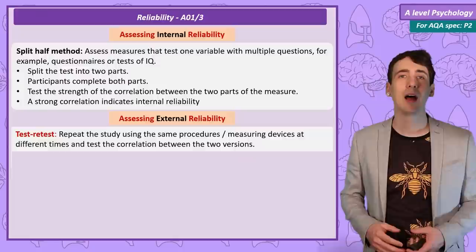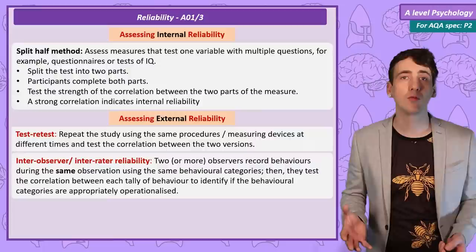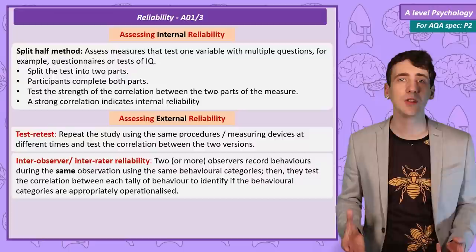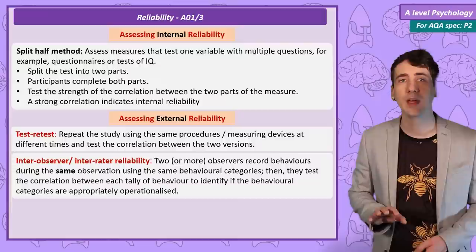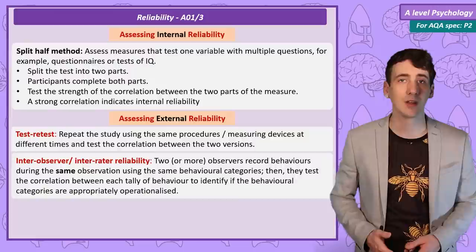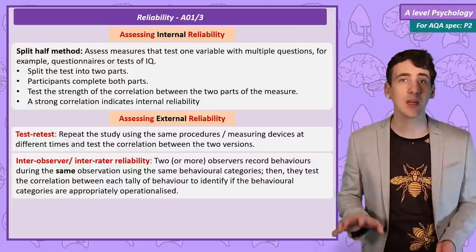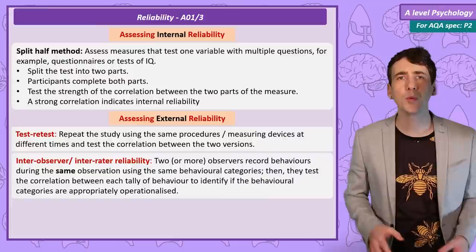Another method used in observational studies is inter-observer reliability. In an observation, researchers firstly create a list of behavioural categories, and then either using event or time sampling record behaviours that match this list in a tally chart. But sometimes the behavioural categories can be vague, or the researchers may interpret behaviour due to their own bias. With inter-observer reliability, the two researchers separately use the same list of behavioural categories, then conduct the same observation, and after the observation compare their results to see if they are closely matched. If you remember my video on content analysis, I said it is just another form of observation, so you can do the same procedure to assess the reliability of content analysis.